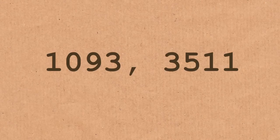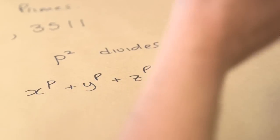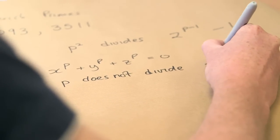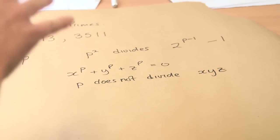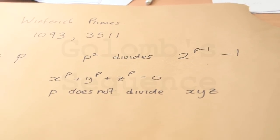So if a next Wieferich prime exists, it will be some huge number. The reason Wieferich was interested in them is they seem to have something to do with Fermat's Last Theorem. Wieferich proved that if x^P + y^P = z^P for integers x, y, z where P does not divide x, y, or z, then P has to be one of these Wieferich primes.